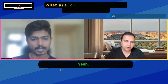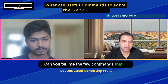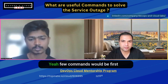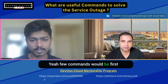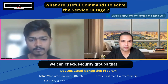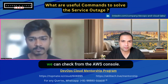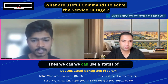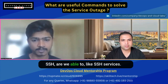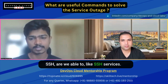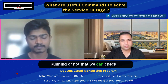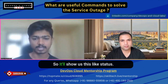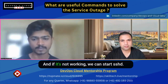Can you tell me a few commands that might help you in doing all these activities? Sure — first, we can check security groups from the AWS console. Then we can check the status of the SSH service — whether it is running or not — using the command: systemctl status sshd. That will show us the current state of the SSH daemon.